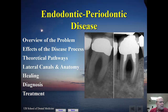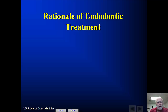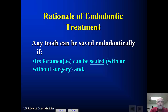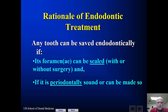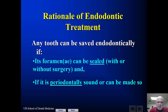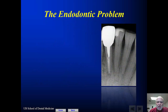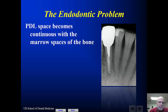As we look at the overview of the problem, we're going to look at the rationale of endodontic treatment. Any tooth can be saved endodontically so long as the tooth or the foramen can be sealed with or without surgery, and if the tooth is periodontally sound or can be made periodontally sound. This is a critical element in understanding the differences between endodontic and periodontal disease. The endodontic problem is related to how the tooth is attached to the bone.